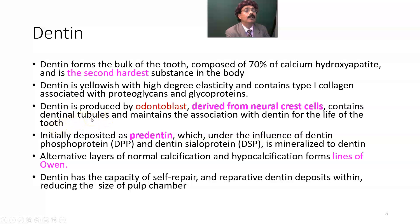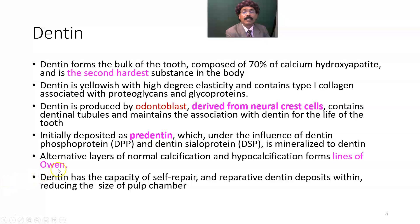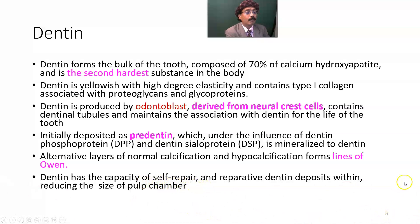The odontoblasts maintain their association with dentin for the life of the tooth. Nerve fibers may extend to the dentin-enamel junction. Dentin is initially deposited as predentin, which under the influence of dentin phosphoprotein and dentin sialoprotein is mineralized to dentin. Alternating layers of normal calcification and hypercalcification form the lines of Owen. Dentin has the capacity of self-repair, and reparative dentin deposits within the pulp cavity, reducing the size of the pulp chamber.